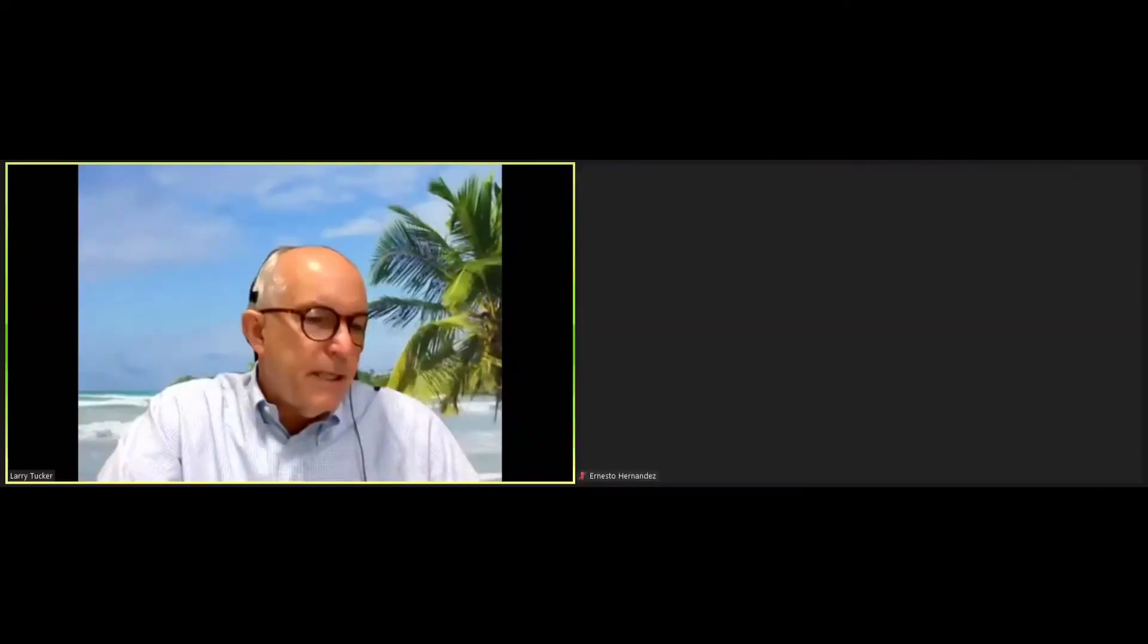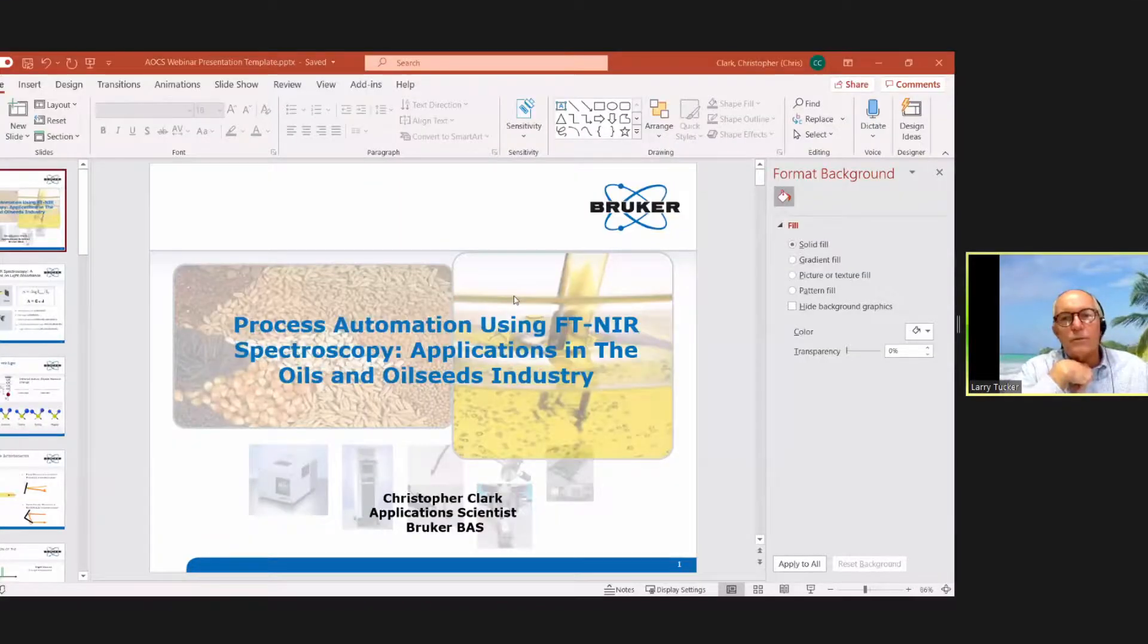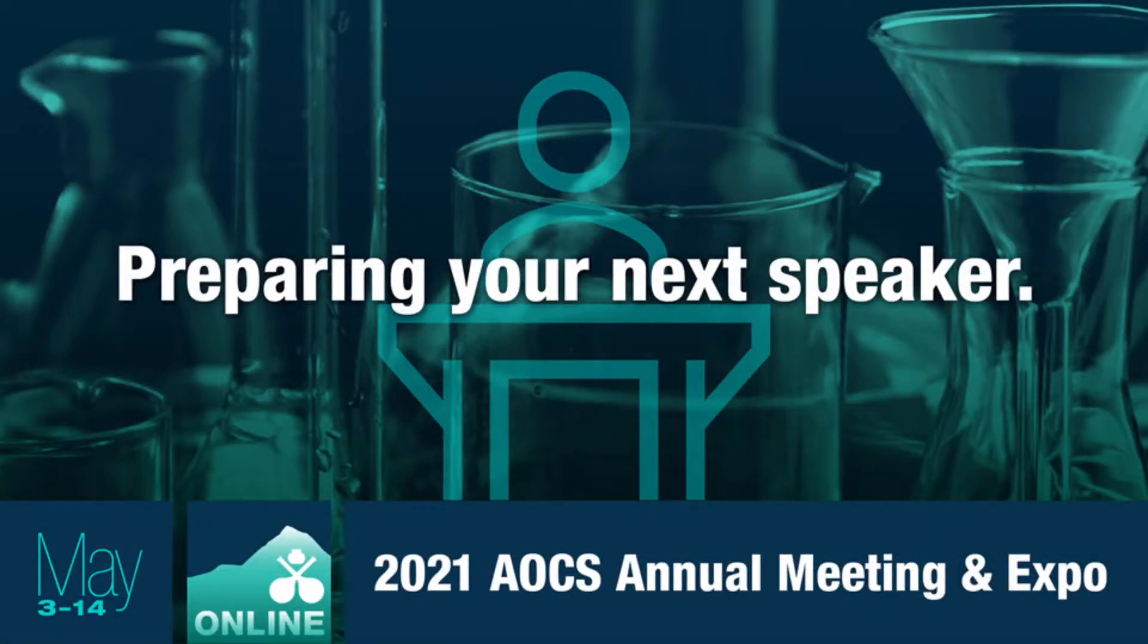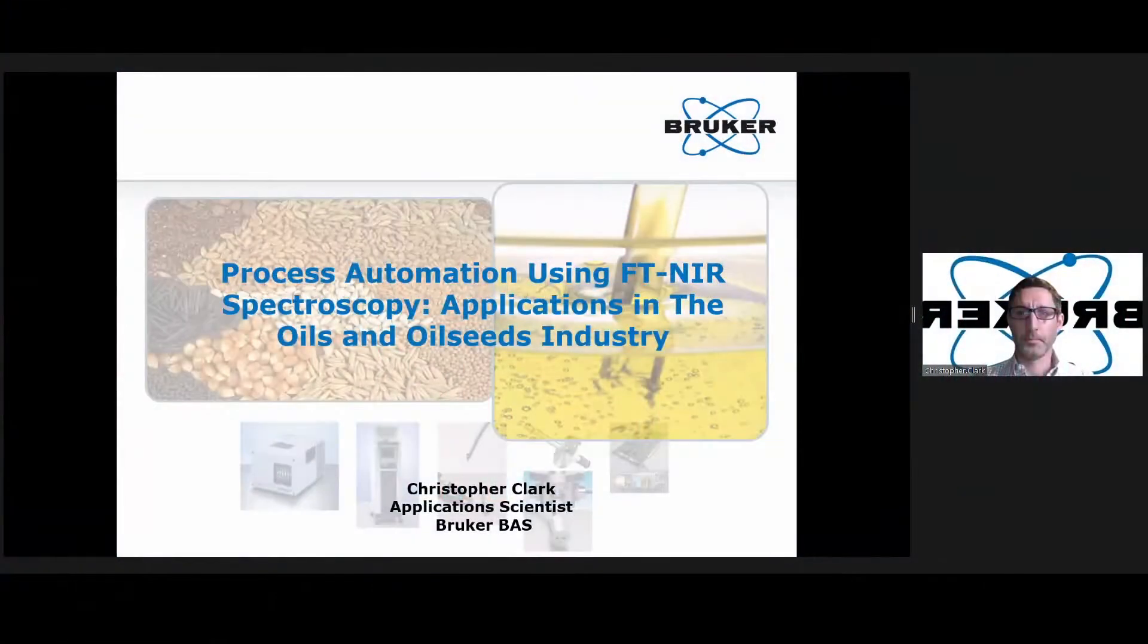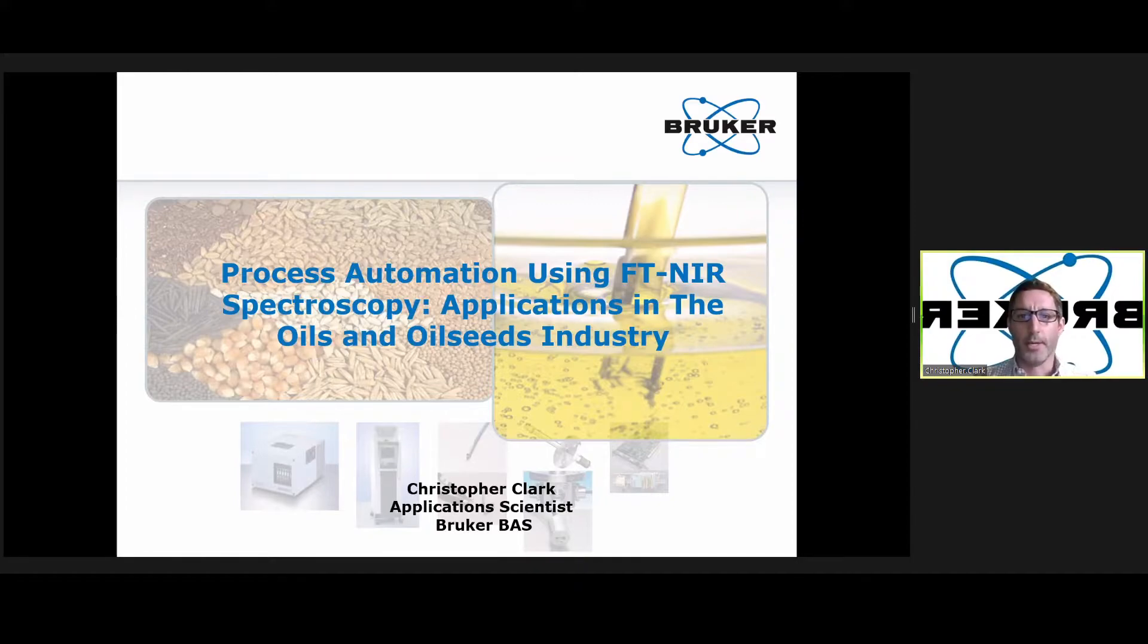Our next speaker is Christopher Clark. Christopher is going to be talking with us about process automation using Fourier transform near-infrared spectroscopy with a focus on applications in the oils and oilseed industry. Christopher is an application scientist specializing in FTNIR process analytics for Bruker Scientific. He has over 15 years of industry experience in the field of process analytics, including the last four years with Bruker. Welcome Christopher, and I'm going to turn it over to you. All right, thank you everybody. So my name is Chris Clark, and I'm an application scientist with Bruker Applied Spectroscopy, focusing in process automation using near-infrared technology. And I'm going to talk a little bit about its application in the oils and oilseeds industry.